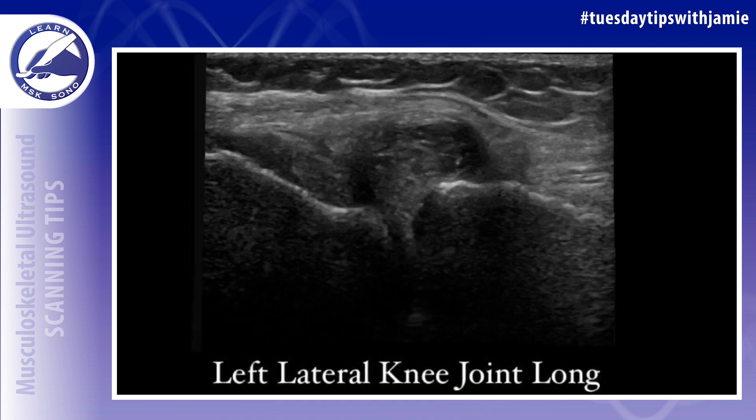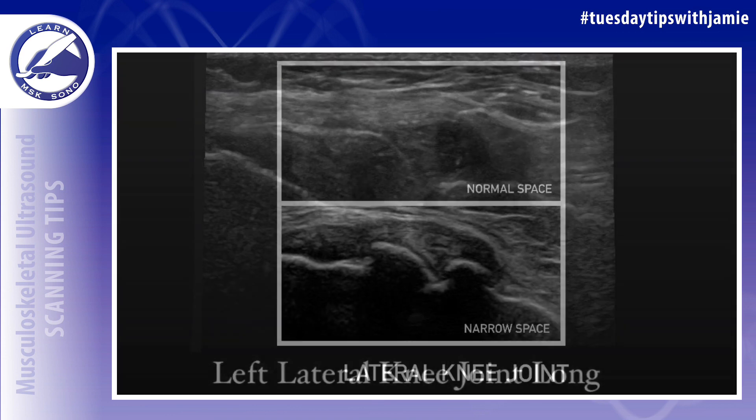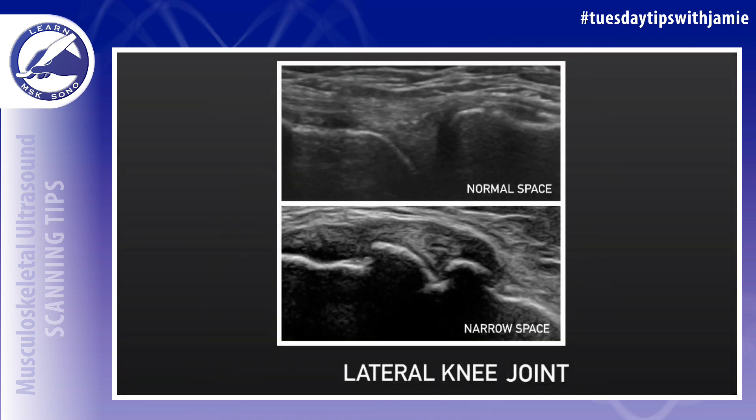Here's another example of a secondary sign, but this time it's in the knee and it's regarding the labrum. In this case, when the joint space was narrow from arthritis, there was extrusion of the labrum outside the knee joint. Here's a side-by-side comparison of a normal knee joint versus one with joint space narrowing.